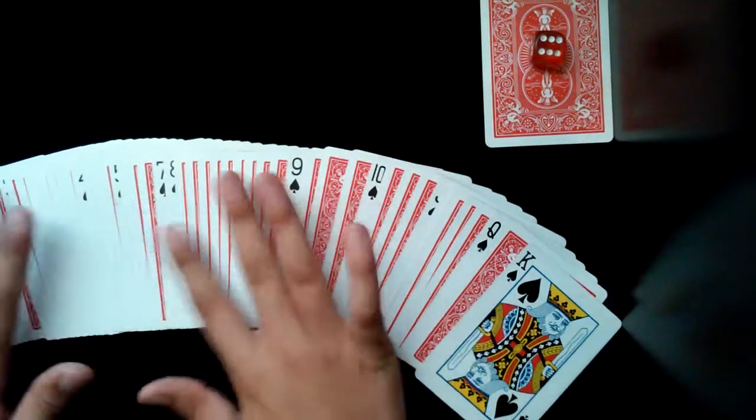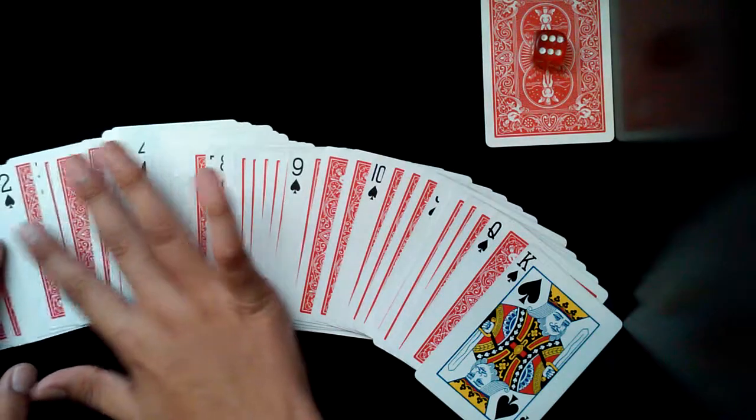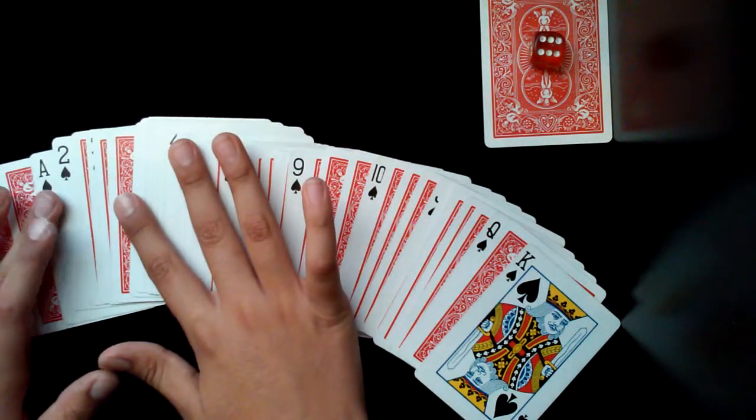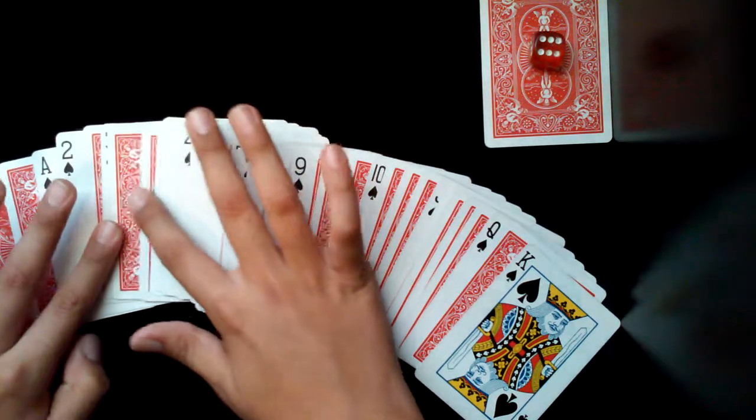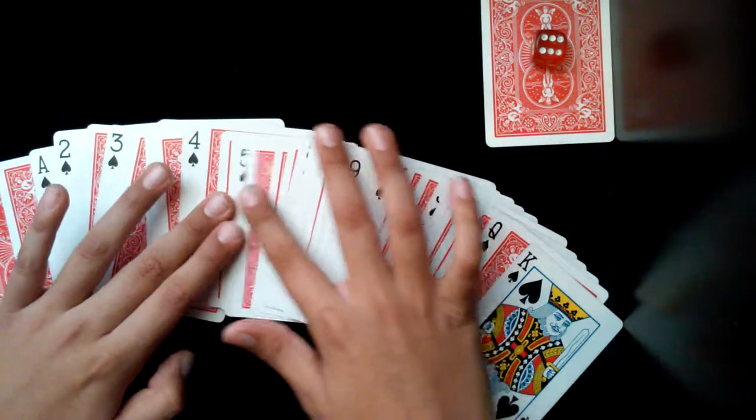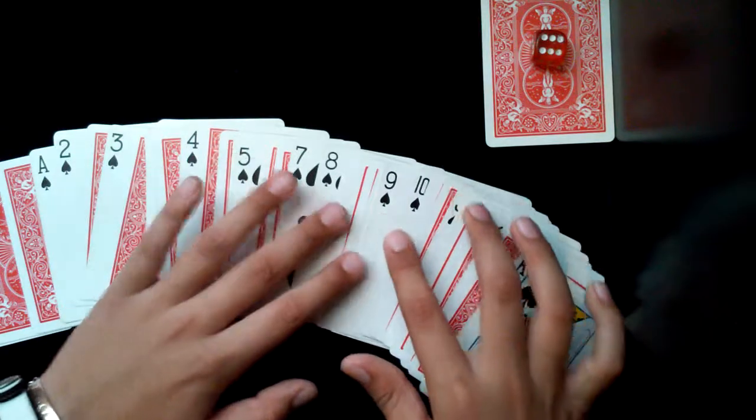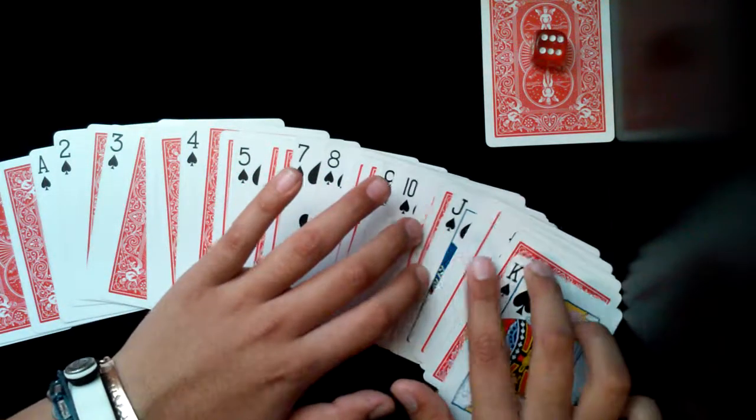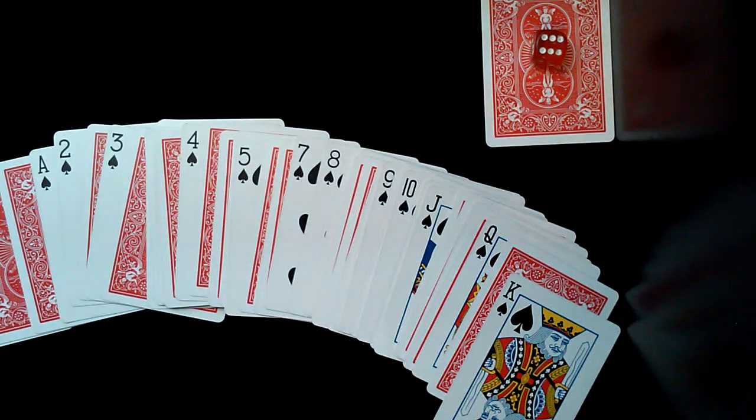Some over and some not. So if you guys can see, I have the ace, the two, the three, four, five, seven, eight, nine, ten, jack, queen, and king all right there.